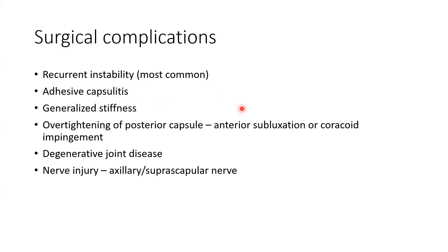Why is hemiarthroplasty used for chronic cases? When the humeral head is not in contact with the glenoid, it becomes osteopenic and weak. After prolonged dislocation it becomes soft, and when you try to relocate it, the humeral head can collapse. Surgical complications overall include recurrent instability (most common), adhesive capsulitis, generalized stiffness, overtightening of posterior capsule leading to anterior instability or coracoid impingement, degenerative joint disease, and nerve injury — mainly axillary or suprascapular nerve.